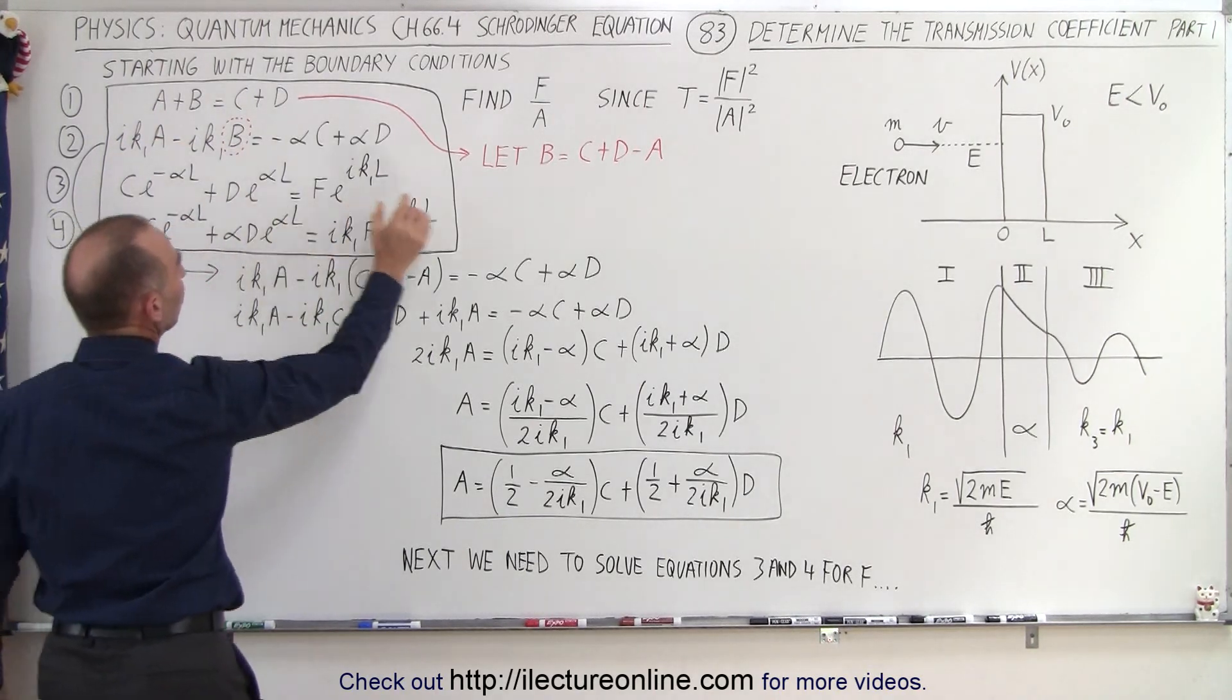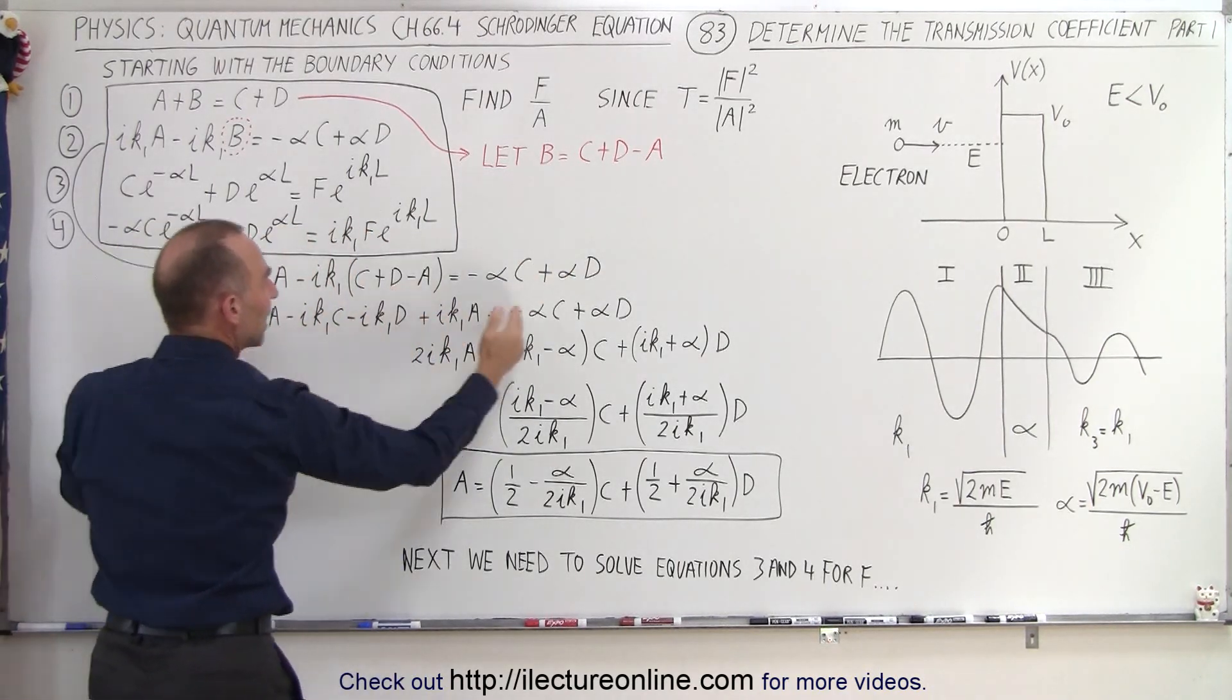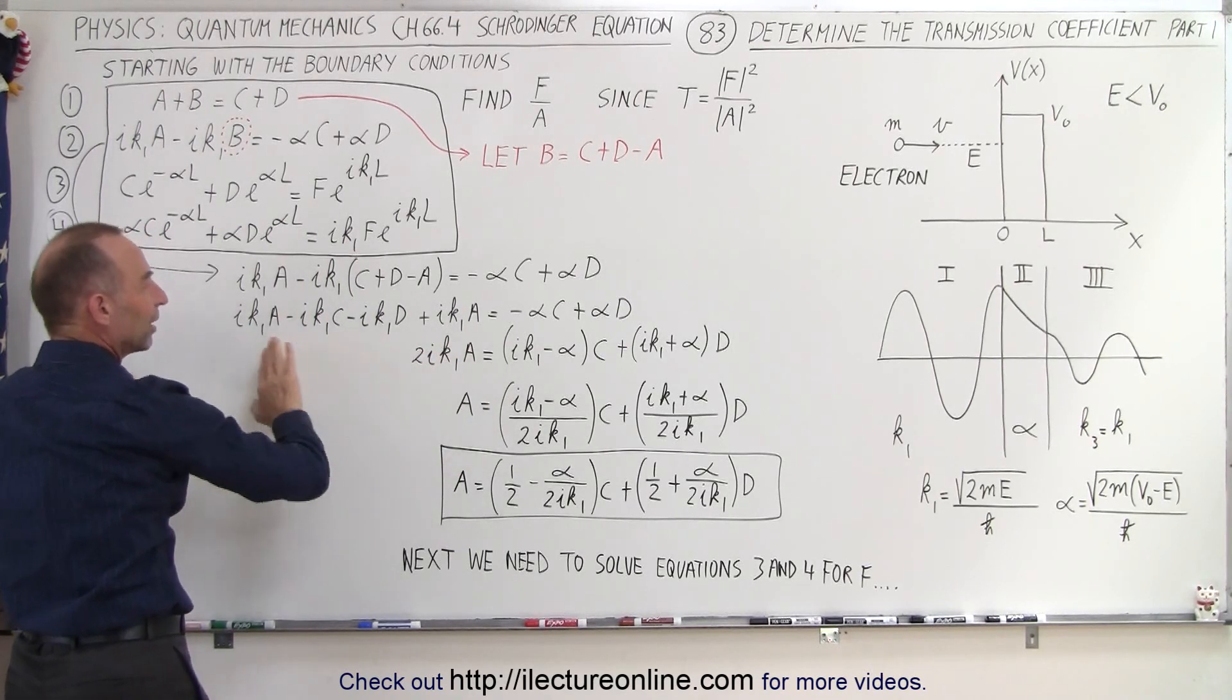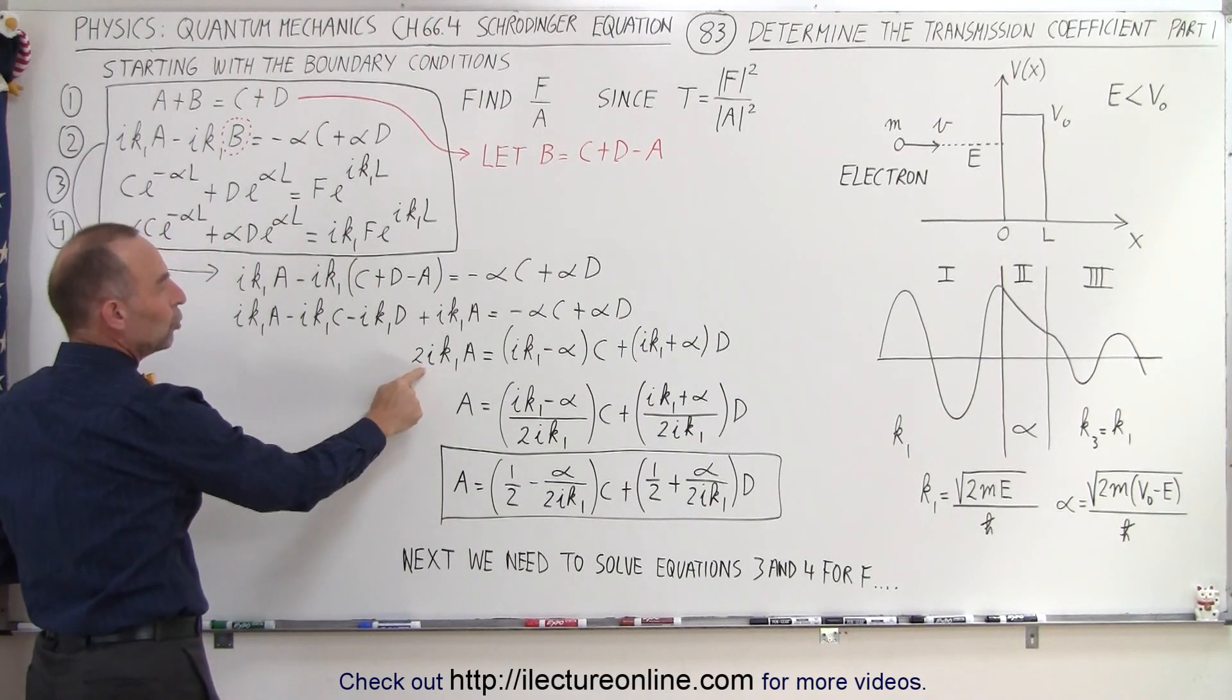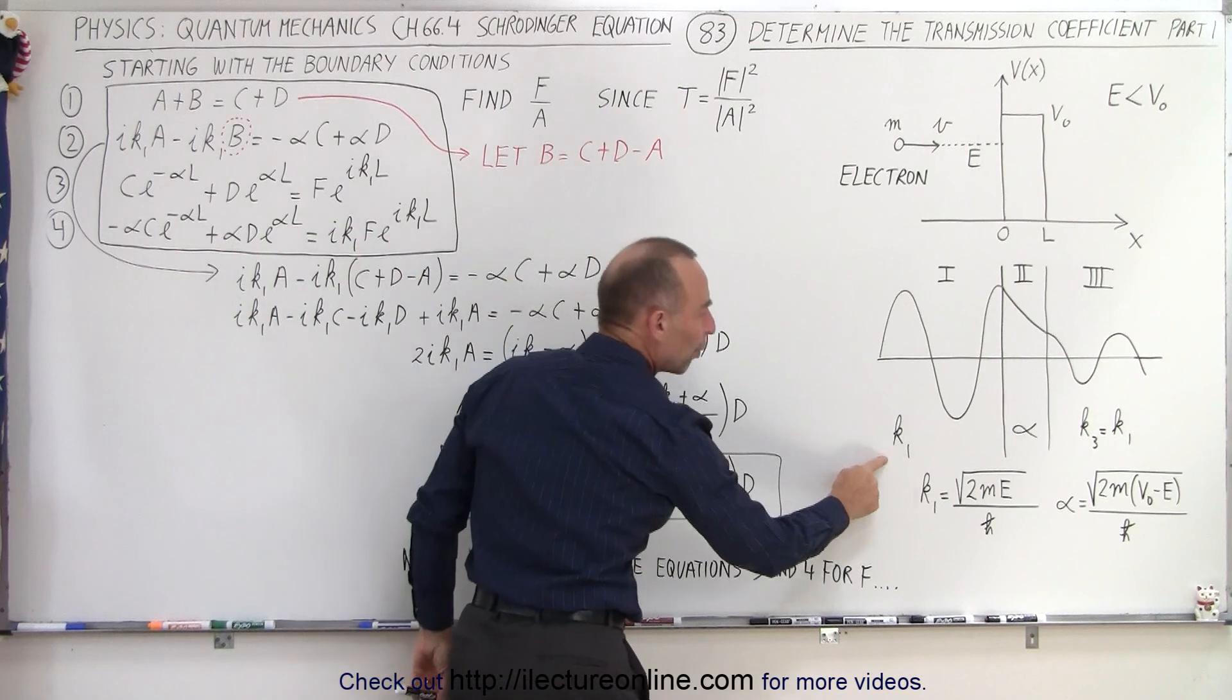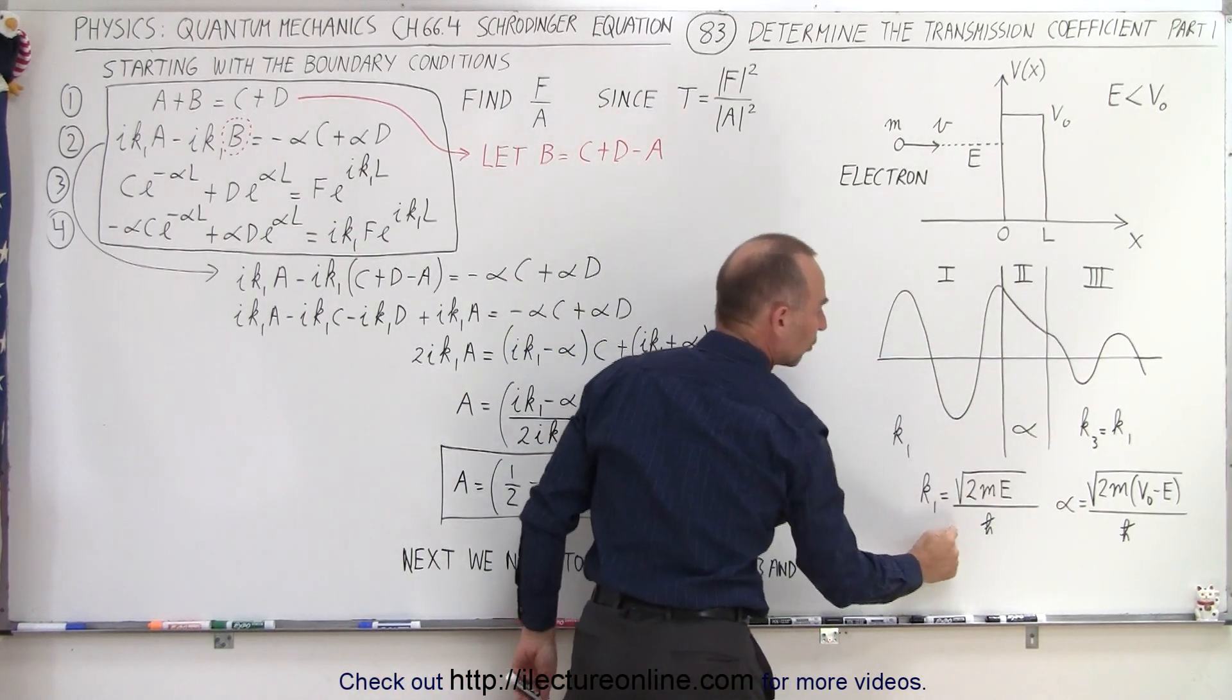When we do that, we substitute c plus d minus a in for b. We expand the equation right here. Then we keep all the terms with the a on the left side, all the other terms on the right side. So on the left side we end up with 2i k1 a. Remember that k1 was the wave number in region 1, which also ends up being the wave number in region 3.